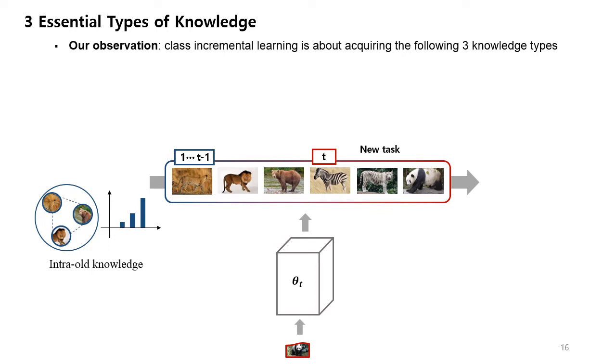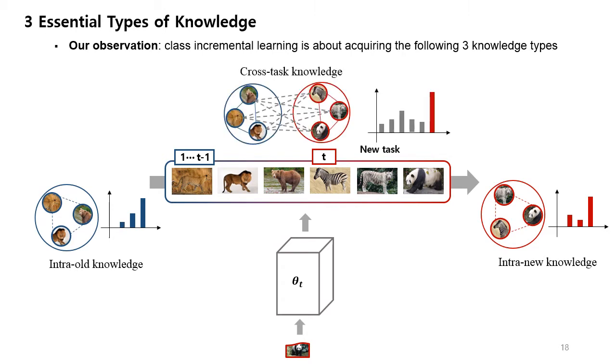Our first observation is that there are three knowledge types to achieve the ultimate goal of class incremental learning. First, intra-old knowledge is the knowledge for discriminating all the samples of old classes that have been previously learned until time step t-1. When a new task comes in at time step t, we have to learn intra-new knowledge, which is the knowledge that discriminates new samples only within a new task. And at the same time, we also have to acquire the cross-task knowledge. It is the knowledge that distinguishes each new sample from all the previous samples. In other words, this is the knowledge that lies between the old task and the new task. When each of these three knowledge types is effectively learned in a balanced manner, we can reach the goal of class incremental learning.